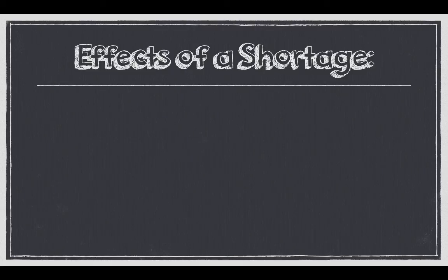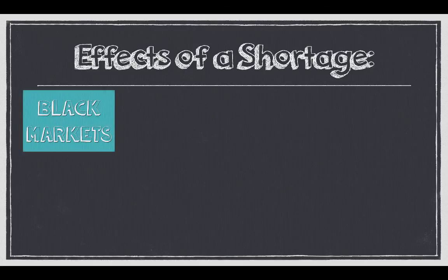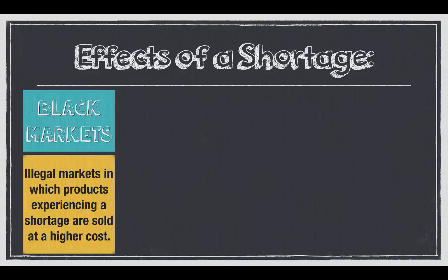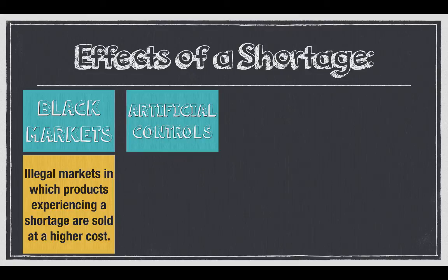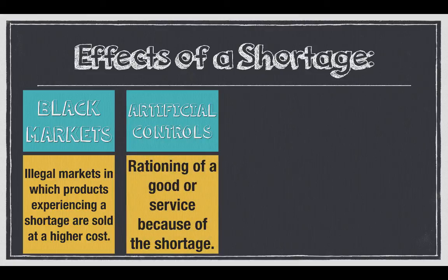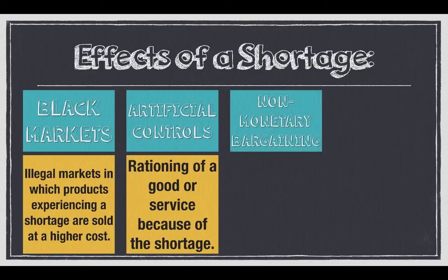Moving forward, we see the effects of a shortage. You might see black markets pop up, like concert tickets selling for two or three times the price. Artificial controls like rationing — think of rationing for watering plants or getting gas in the 70s.